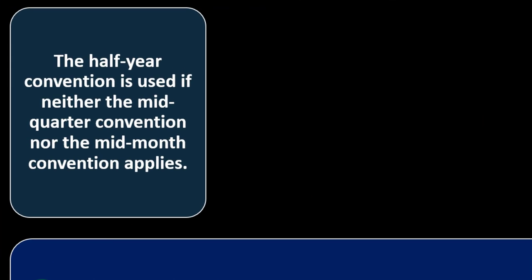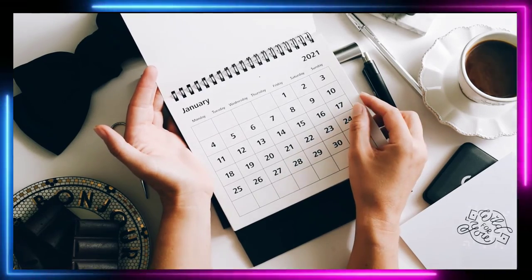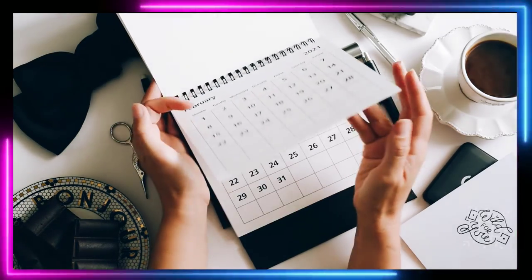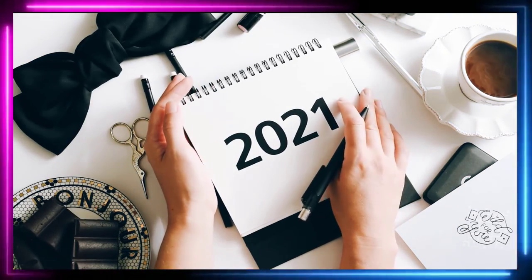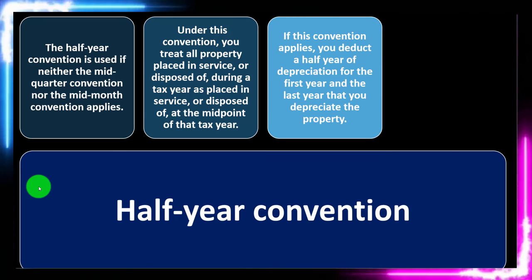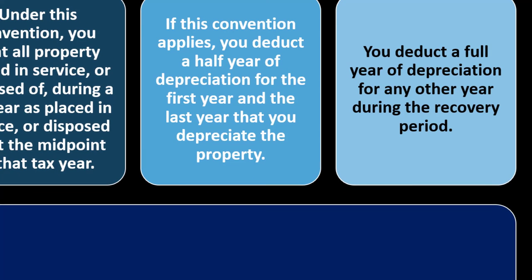The half-year convention is used if neither the mid-quarter nor the mid-month convention applies. Under this convention, you treat all property placed in service or disposed of during a tax year as placed in service at the midpoint of that tax year. The half-year convention is effectively the default for most personal property. If this convention applies, you deduct a half-year of depreciation for the first and last year you depreciate the property, and a full year for any other year during the recovery period.